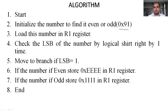If the carry flag is updated with bit value 1, then it represents the given number is odd. If the carry flag bit is updated with logic 0, then it represents the given number is even. This is how we find out whether the given number is even or odd. If the given number is even, we store 0xEEEE in the R1 register. If the given number is odd, we update the same R1 register with 0x11111. This is the algorithm.